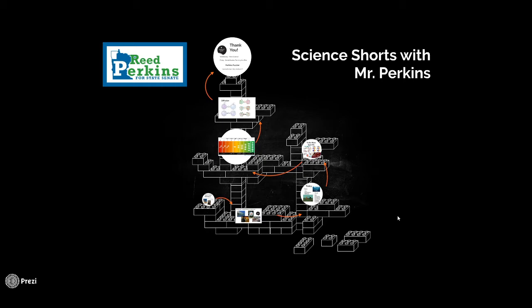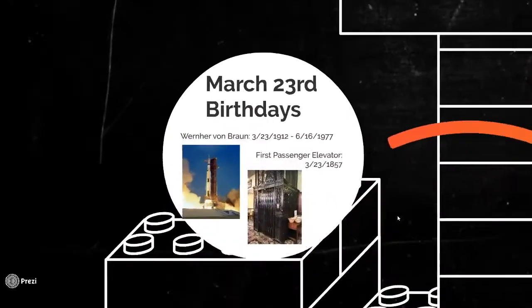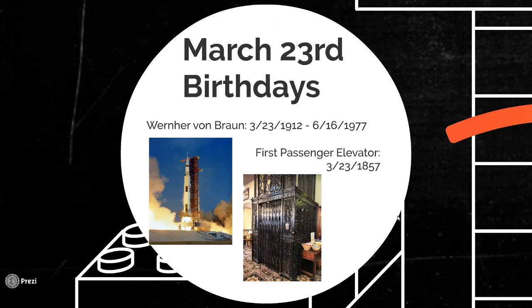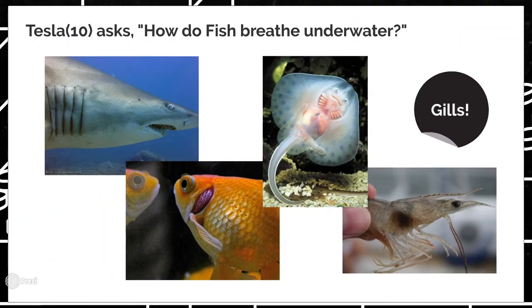I'm going to start the way I started all of my classes when I taught high school — we start with birthdays. It is March 23rd, the birthday of Werner von Braun, born March 23rd, 1912. He was certainly a complicated historical figure, but one of the fathers of modern rocketry and one of the designers of the Saturn V rocket that helped us with the Apollo program and be first on the moon. It is also the birthday of the passenger elevator — the very first passenger elevator was installed March 23rd, 1857 by the Otis Elevator Company, and if you look at elevators to this day, frequently you will see the name Otis on them. Happy birthday to Werner von Braun and elevators!